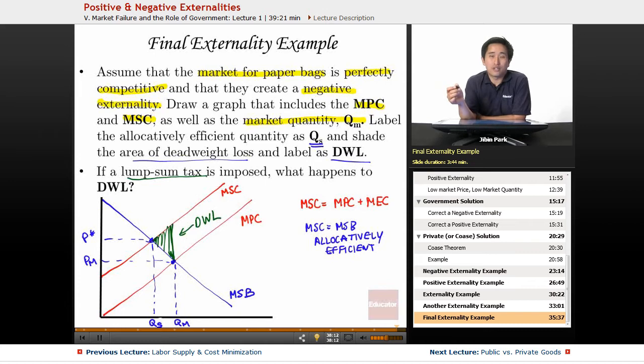A per unit tax does affect the margins, whereas a lump sum tax does not affect the marginal cost. A lump sum tax does not affect production. So most questions that ask about lump sum and ask how is that going to change your production, generally the answer is not going to be anything at all.